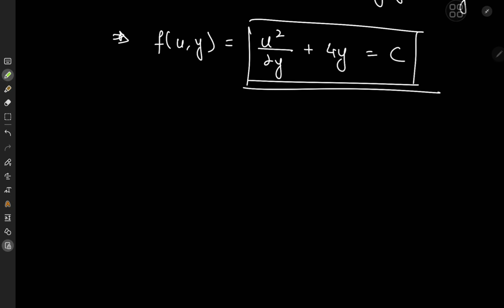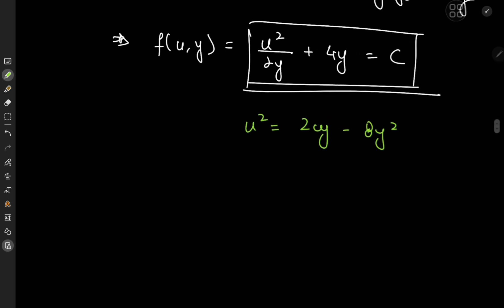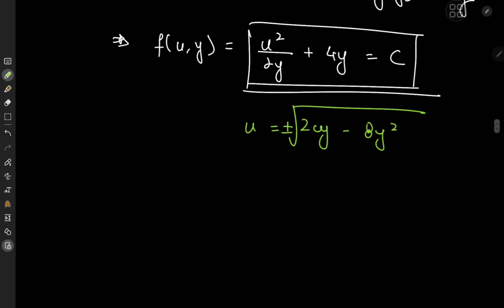We still need to figure out how to express y in terms of x. To do that, we'll first solve this equation for u: u² equals 2cy minus 8y². Taking the square root gives either the positive or negative square root. Remember that u was dy/dx, so we now have a nice separable differential equation in y and x.